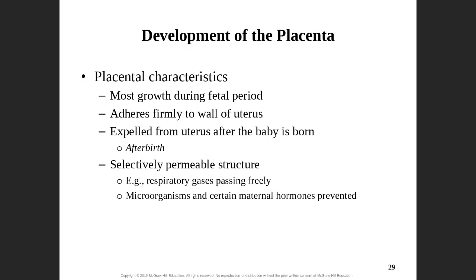Most of the placenta's growth occurs during the fetal period. It is going to be firmly attached onto the wall of the uterus and plays a big role in sustaining the fetus. After childbirth, the placenta will be expelled — we refer to it as afterbirth. It's like a plasma membrane — it's selectively permeable, only going to let certain things pass by. Really small structures like respiratory gases can move across the placenta, but certain hormones and microorganisms will have much more difficulty.